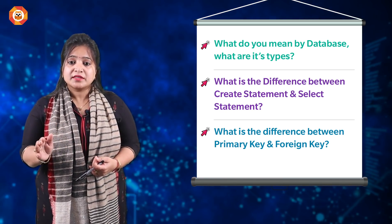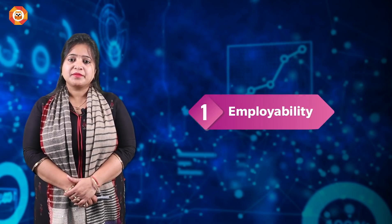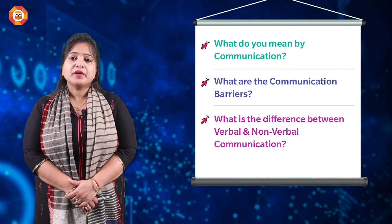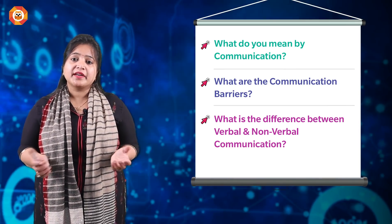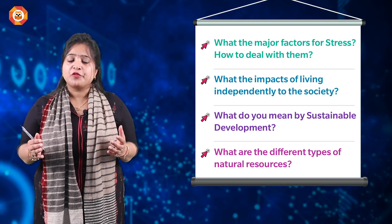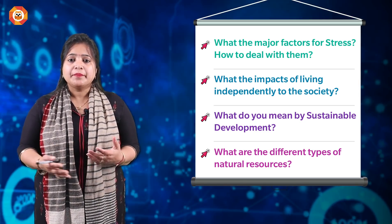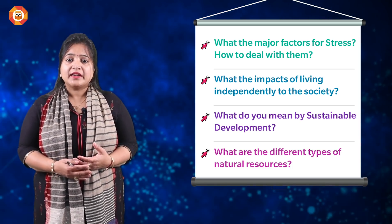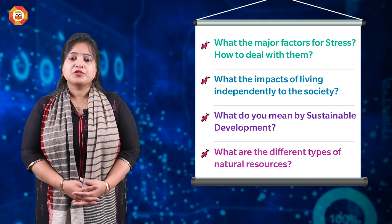Now comes chapter one, Employability — a section introduced by CBSE this year only. Important topics include: what is communication, what are the communication barriers, and what is the difference between verbal and non-verbal communication. Next, how to deal with stress and what are the factors responsible for stress. Another important question: how to live independently — if a person is living independently, what factors do they contribute to society and what changes do they themselves experience.